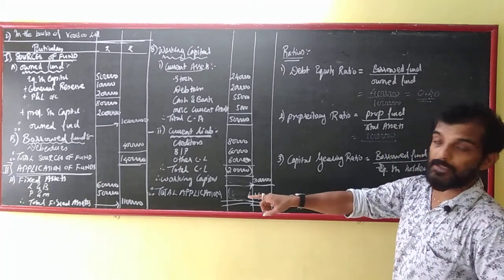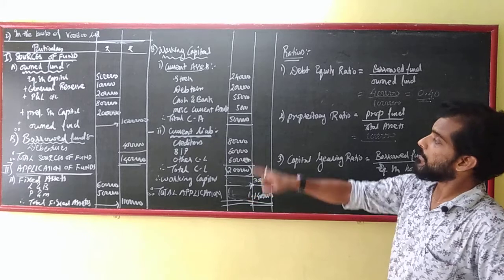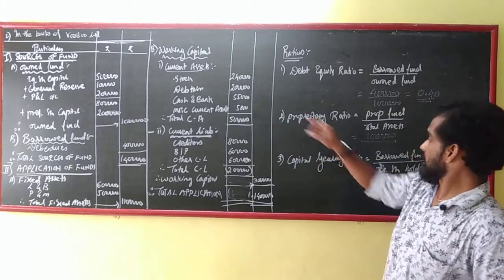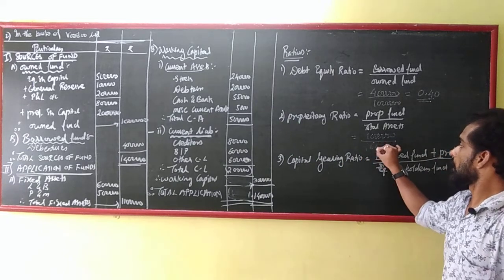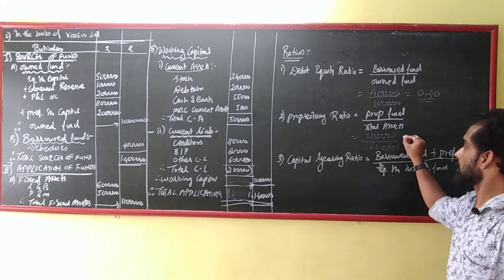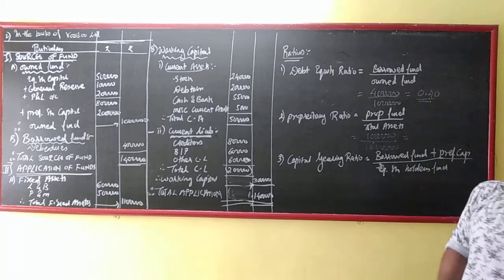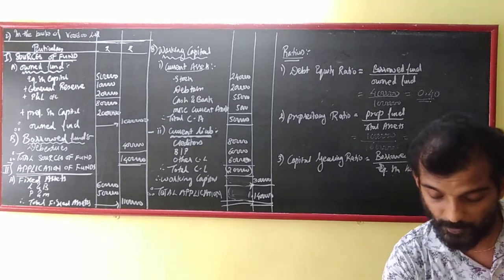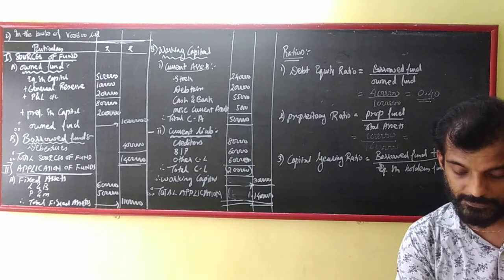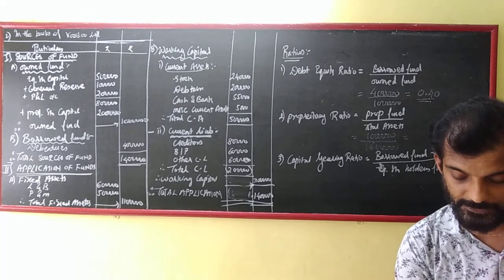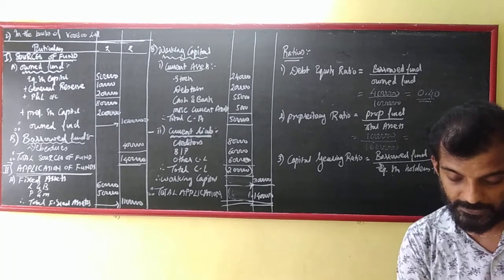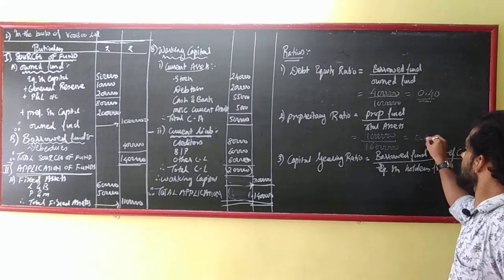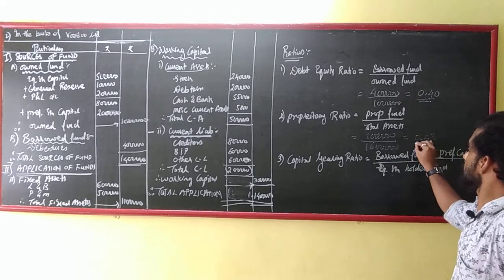My fixed assets are 11 lakhs and my current assets are 5 lakhs. So 11 plus 5 equals 16. So that is equal to — it is equal to 0.625, yani ke 0.63. Clear?